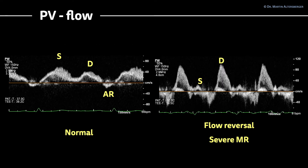To compare this with a pathological example: on the left-hand side you have the normal variant — you see nicely the AR time, the systolic and diastolic flow. On the right-hand side, you see a flow reversal in severe mitral regurgitation. The systolic signal is way smaller than the diastolic signal, which denotes it is pathological, and you have this systolic flow reversal in between the S and the D wave.